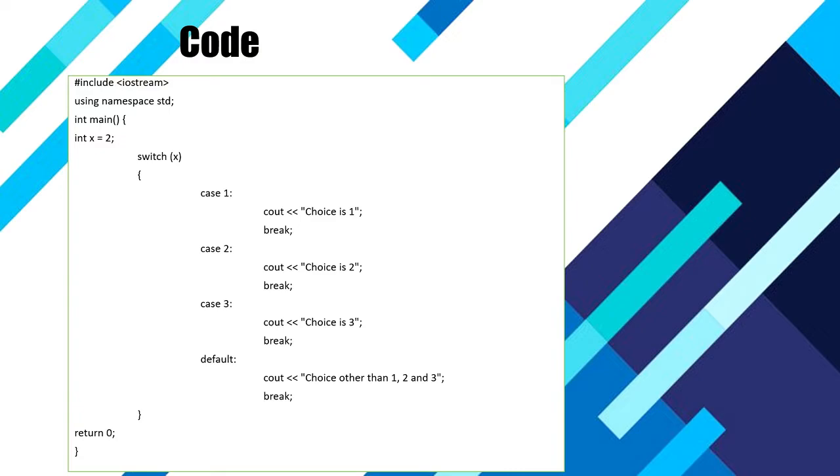This code has include iostream header file, using namespace std, then int main, then int x equals 2. Then switch as a switch case is there. We are taking case 1, case 2, and case 3 with cout statements saying choice 1, choice 2, and choice 3. In the default statement we are giving choice other than 1, 2, and 3.